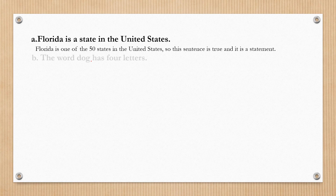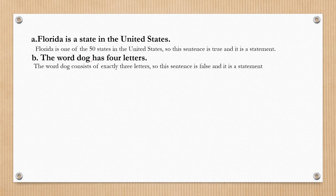Letter B: 'The word dog has four letters.' The word 'dog' consists of exactly three letters, so this sentence is false. It is a declarative sentence, so it qualifies as a statement — specifically, a false statement.